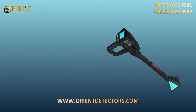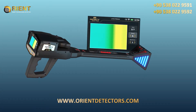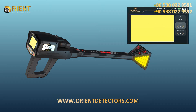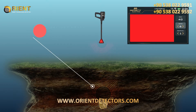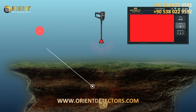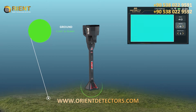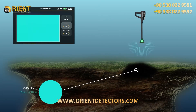The signals captured by the VST probe are represented on the screen of the device as a continuous color stream that changes colors according to the type of potential target. Similarly, the color will be red when capturing a precious metal signal, green for the ground, and blue for cavity.